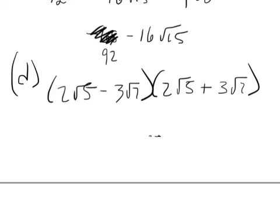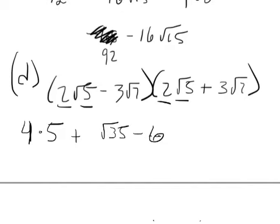Julia, back to you now. Step me through the process. First, outer, inner, and last. So 2 root 5 times 2 root 5, which is 4 times 5. Good. She does 2 times 2 and root 5 times root 5, giving her 4 times 5. Continue. And then plus 6 root 35. And then minus 6 root 35, minus 9 times 7. So Joe, middle terms? They cancel. Julia, continue.